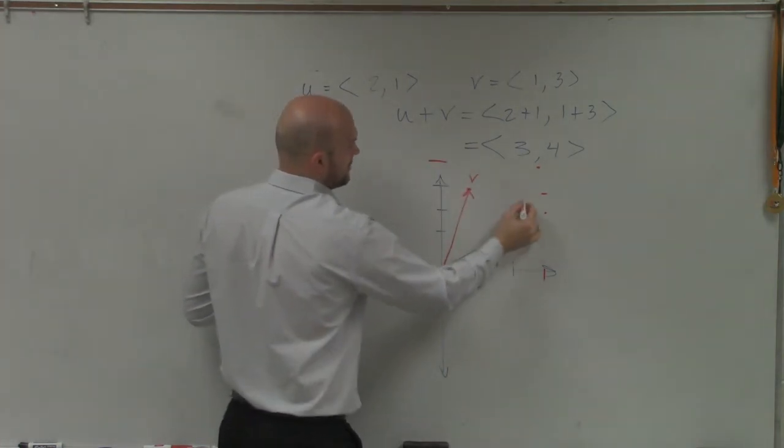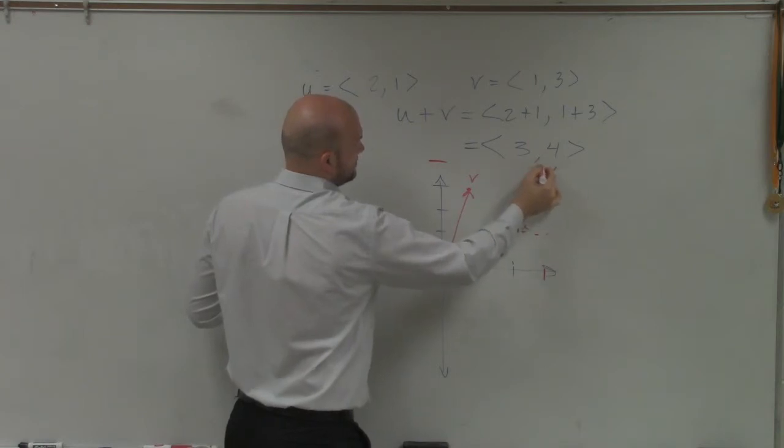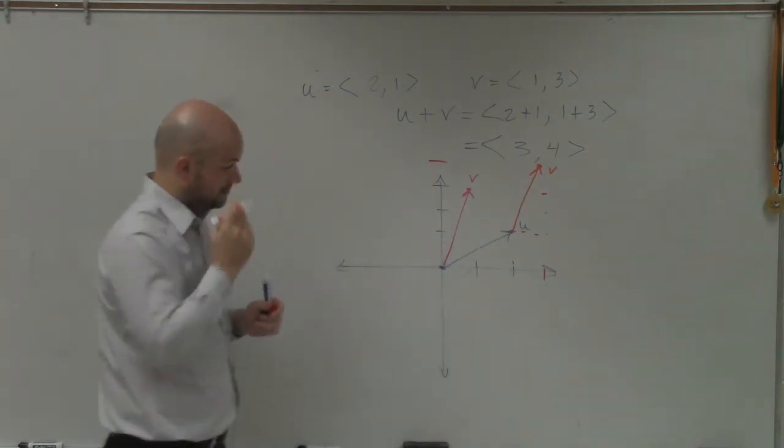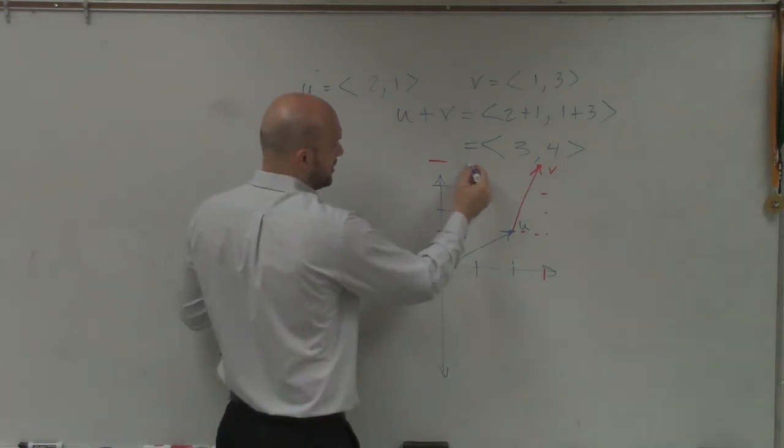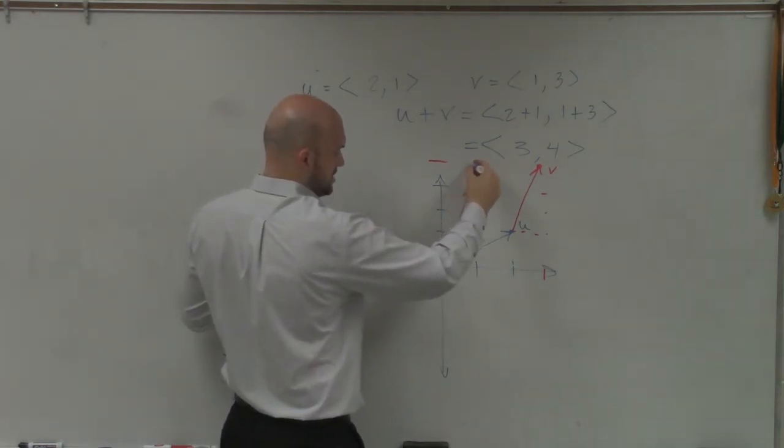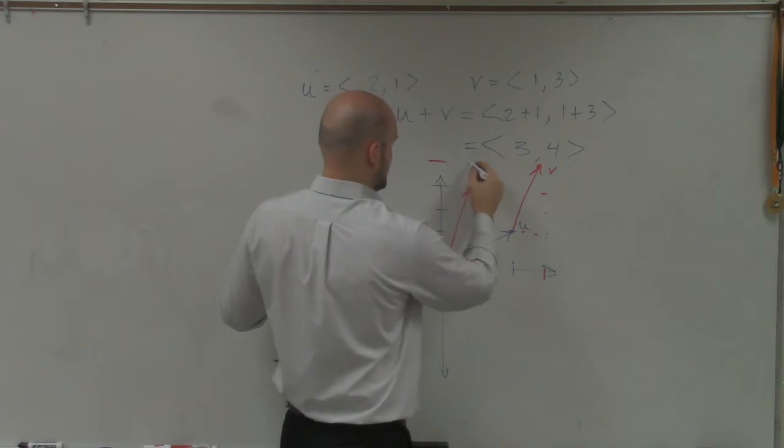So therefore, v would look like that. If I was going to do u, that means I'm going to go up 1, over 3. So up 1, 1, 2, 3.